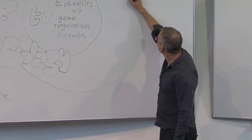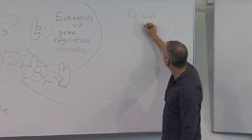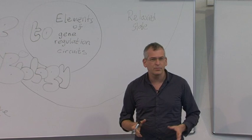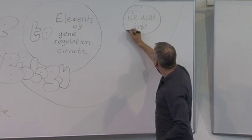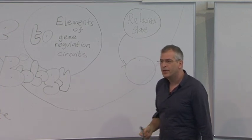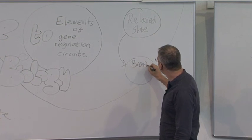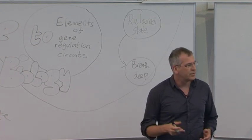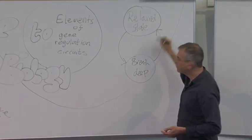We have a relaxed state where we tend to be more curious, playful, and it's good for learning, right? And when you're in this relaxed state, you have certain physiological characteristics. For example, your breath is deep. And it turns out that the other arrow also exists. If you take a deep breath, you're more likely to enter into the relaxed state.